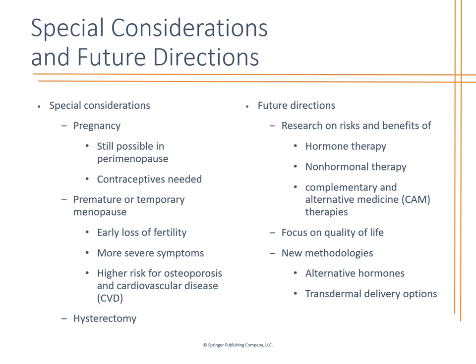Special considerations: pregnancy during perimenopause can happen — women may think they haven't had their period because of menopause, but the pregnancy test comes back positive. Contraception is still recommended until they reach the menopause stage. Temporary or premature menopause involves early loss of fertility and higher risk for osteoporosis and cardiovascular disease, often linked with smoking, obesity, and impaired fasting glucose. Research on hormone therapy, non-hormone therapy, and alternative medicines should be considered with a focus on improving quality of life.